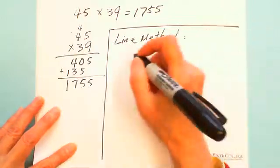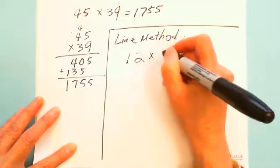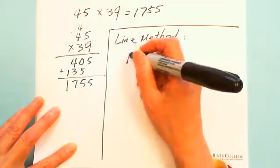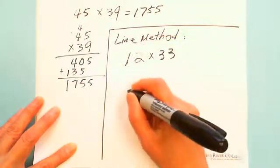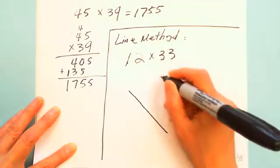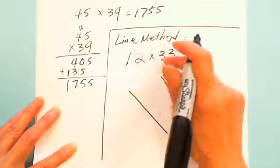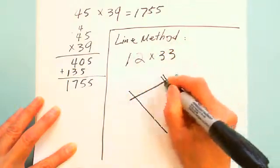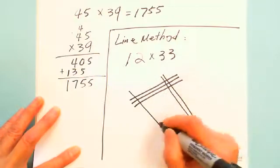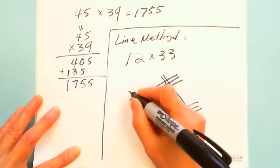This method is for small numbers. For example, you say 12 × 33. They draw lines - one line for 1, two lines for 2. And for 33, they draw 3 lines, and 3 lines here. Then you count the dots.